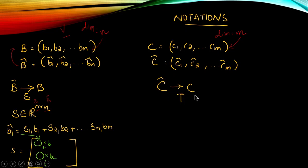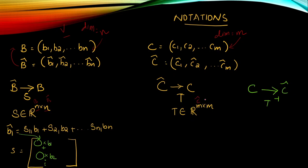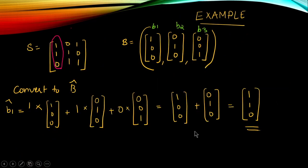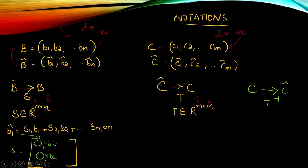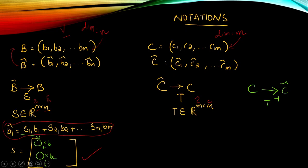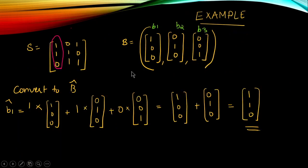Similarly, transformation matrix T is defined for the transformation from Ĉ to C. T belongs to ℝᵐˣᵐ because both C and Ĉ have m basis vectors. For the reverse transformation from C to Ĉ we use T⁻¹. In the same way, ĉ₁ can be expressed as a linear combination of the C basis vectors using the columns of T.